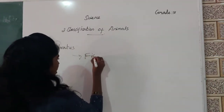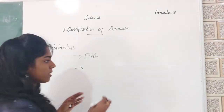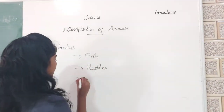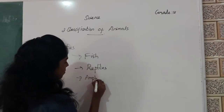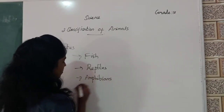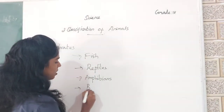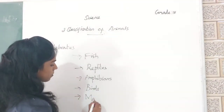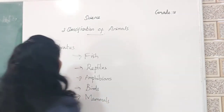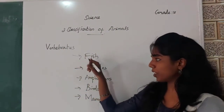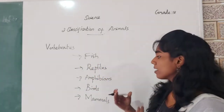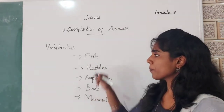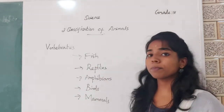These vertebrates are grouped into fish, reptiles, amphibians, birds, and mammals. And we learnt about the unique features of fish, reptiles, amphibians, birds, and mammals.